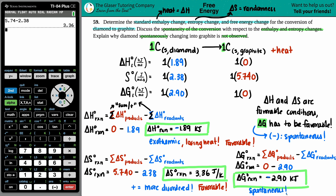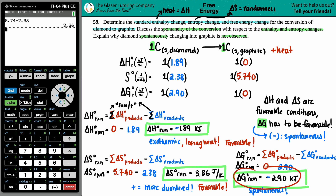For the last part of the question, we need to explain why diamond spontaneously changing into graphite is not observed. Generally, a negative delta G means the reaction will occur. But as the slogan says — diamonds are forever, right?